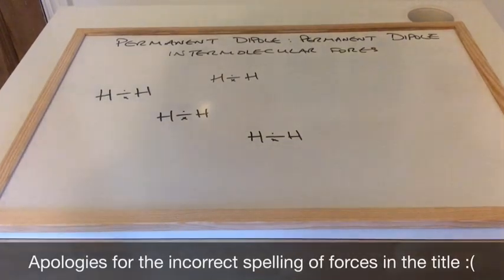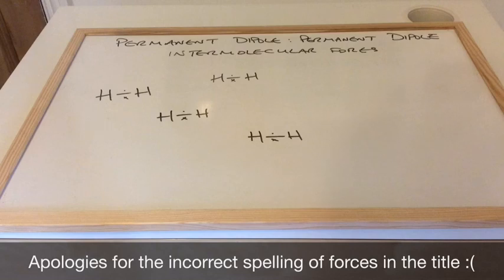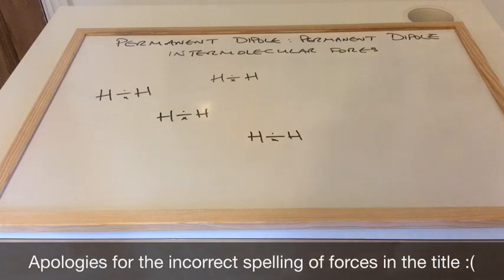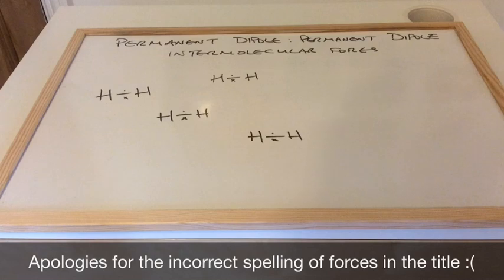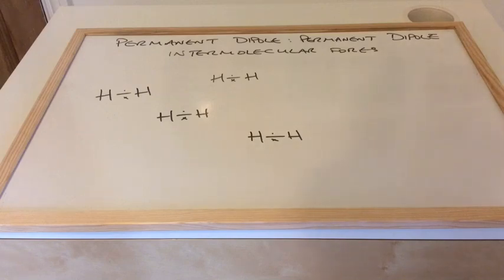In this video I'm going to look at the permanent dipole, permanent dipole intermolecular forces. I've drawn up on the board four hydrogen molecules, just to refresh our memories of the intermolecular forces that exist between these. Hydrogen is a non-polar molecule and so it doesn't have what we call permanent dipoles on it. It has these instantaneous dipoles or fluctuating dipoles, due to the electron density constantly on the move.